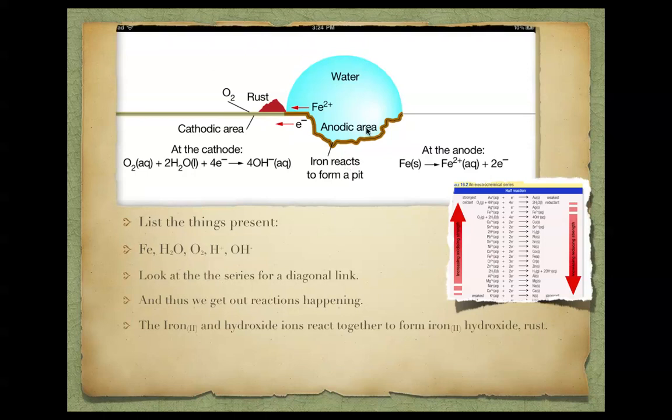Rust happens when iron gets in contact with water. So what we've got here is a droplet of water on a sheet of iron. In this droplet of water, there is H2O. Outside this water, there is oxygen in the air, and in this iron, there is iron.